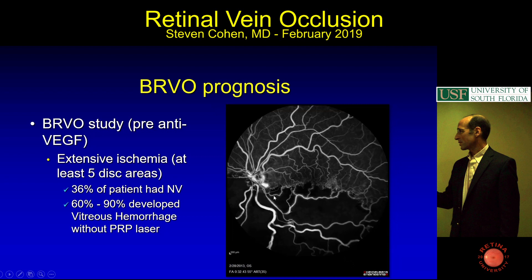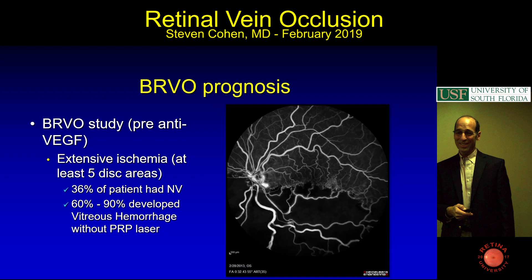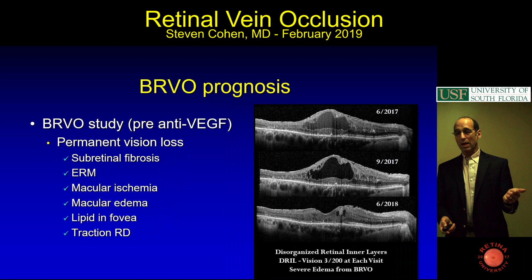There may even be some neovascularization on the nerve already. According to the branch vein occlusion study, 36% of patients with greater than five disc areas had neovascularization. In my career I've seen fewer than five patients with branch vein and neovascularization. You can also lose vision from branch vein occlusion: subretinal fibrosis, epiretinal membrane, macular ischemia.